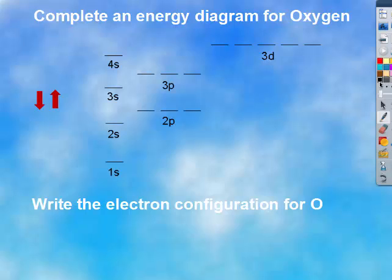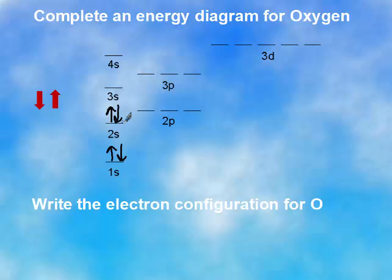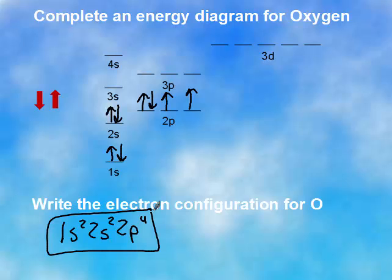Go ahead and do oxygen. So two in the 1s, two in the 2s, that's four. Five, six, seven, eight. Make sure that your energy diagram looks like that on the screen. You should not have an empty orbital in the 2p. So my configuration is simply 1s2, 2s2, 2p. In the 2p, I have 2, 3, 4. So we do not have to distinguish that they're in separate orbitals in the configuration, only on the energy diagram.